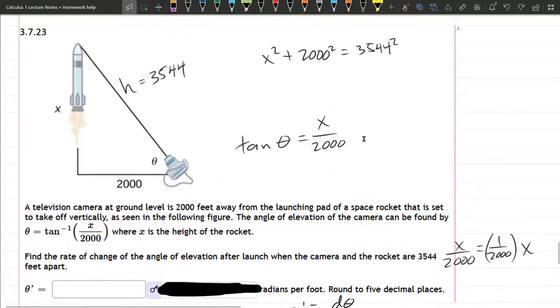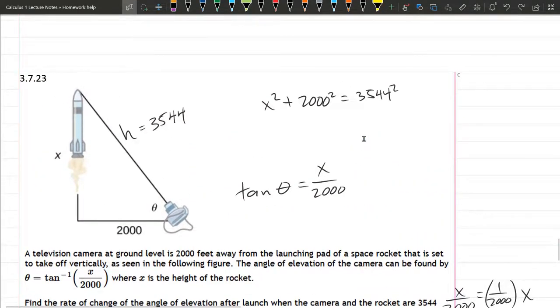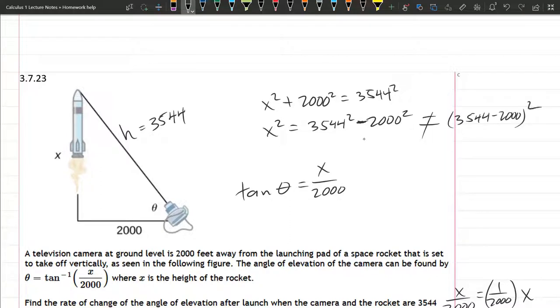So, back up to the top, we have Pythagorean theorem here. I'm going to solve for x squared, subtract 2,000 squared. You cannot, we are subtracting these two numbers, so you can't, you cannot write this as 3,544 minus 2,000 squared. If they were multiplied, you could do that, but not if they're added or subtracted. So do not make this mistake.